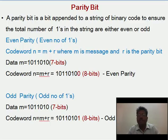There are two variations for the Parity Bit: Even Parity and Odd Parity. Even Parity indicates that the total number of ones in the message including the Parity Bit is even, and Odd Parity indicates that the total number of ones in the message and Parity Bit are odd. The code word n is written as m plus r, where m is the message and r is the Parity Bit.